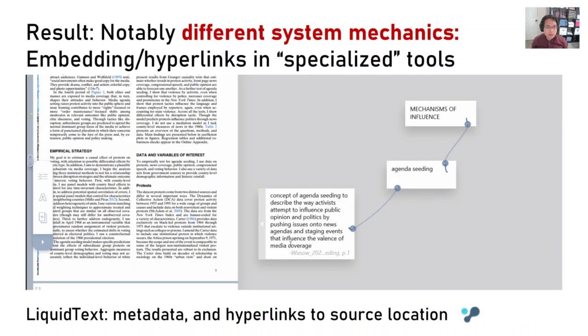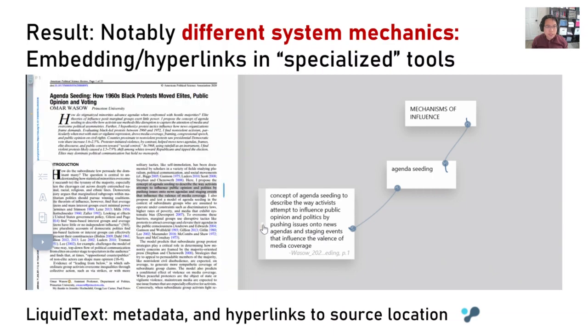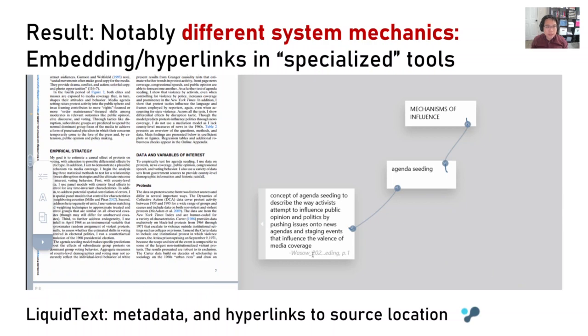Similarly, in Liquid Text, users were able to have metadata embedded in the source of the excerpt, as well as a means of hyperlinking back to the source location to recover even more context in a single click.